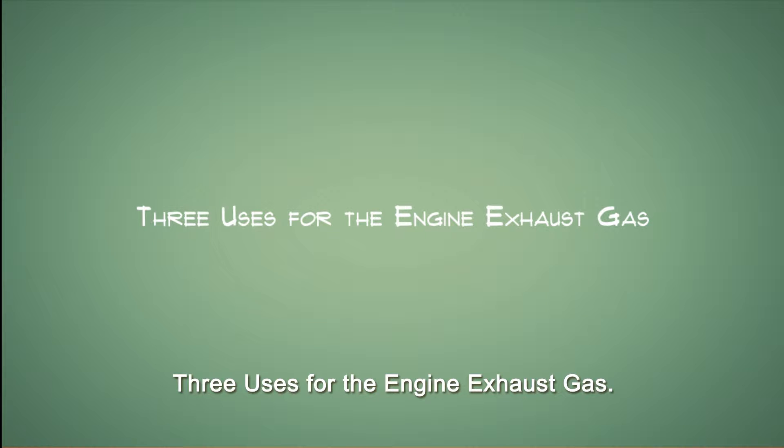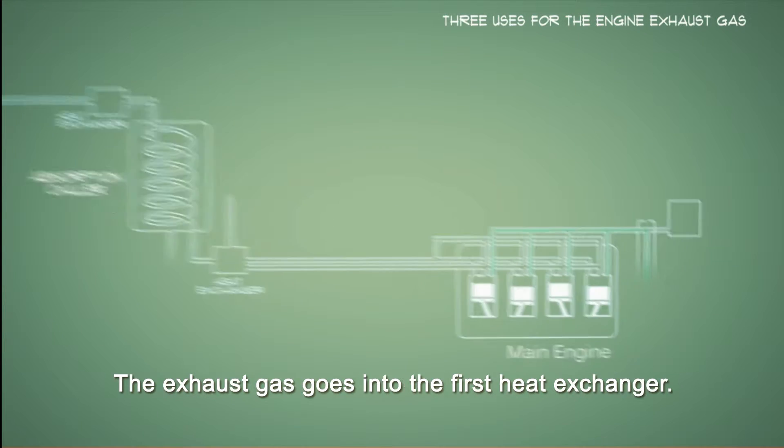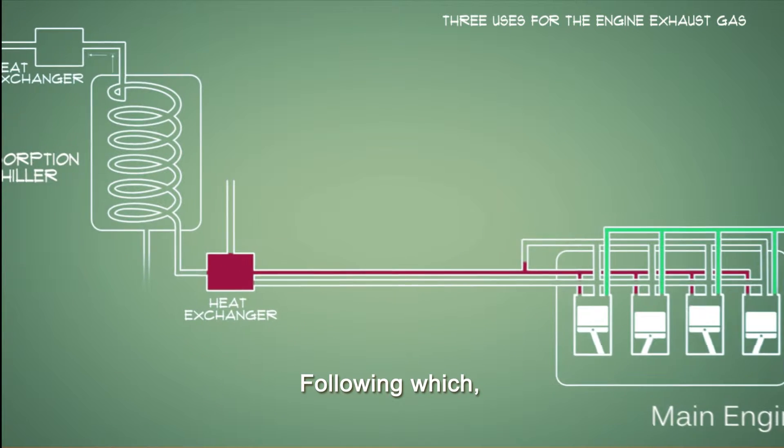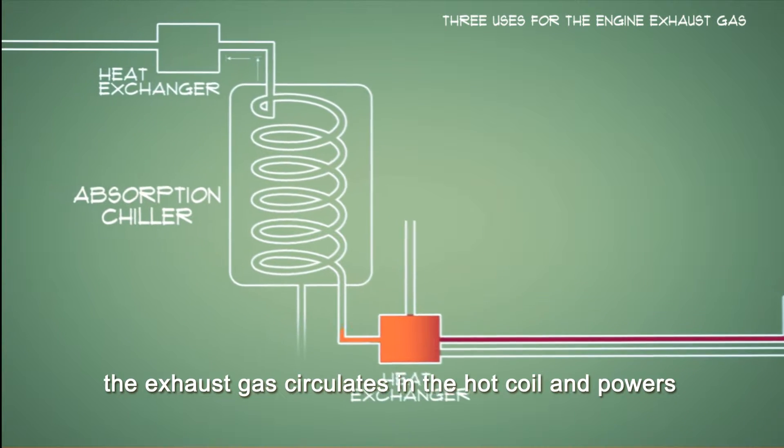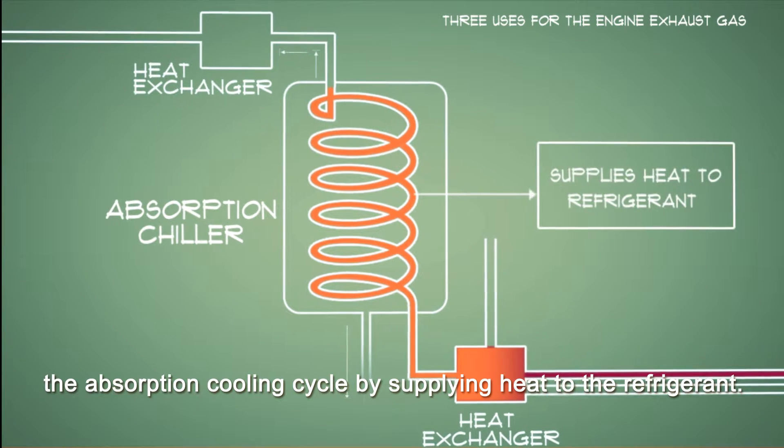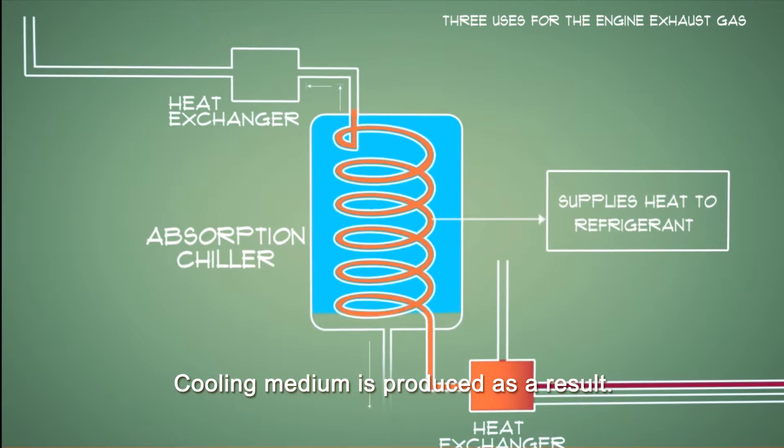Three uses for the engine exhaust gas. Firstly, engine exhaust to power absorption chiller. The exhaust gas goes into the first heat exchanger. Following which, the exhaust gas circulates in the hot coil and powers the absorption cooling cycle by supplying heat to the refrigerant. Cooling medium is produced as a result.